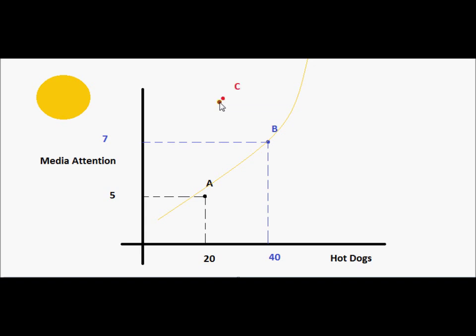If we were to continue this, we would say, well, unambiguously, bundle C would be better than bundle B. After all, it has more of a good and less of a bad, so that's unambiguously better. And bundle D would be unambiguously worse.